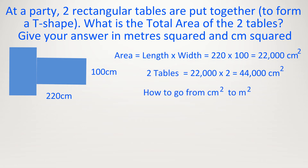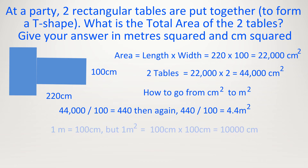Now how do we go from cm squared to m squared? It's not divided by 100 — it's divided by 100, then divided by 100 again. 44,000 divided by 100 equals 440, and then divided by 100 again equals 4.4. Notice: 1 meter equals 100 cm, but 1 meter squared equals 100 cm squared — because we've squared both sides. 1 meter squared is equal to 100 times 100, which equals 10,000 cm squared. That's why we divide by 100 then 100 again, because that is the same as dividing by 10,000. Therefore the answer is 4.4 meters squared.